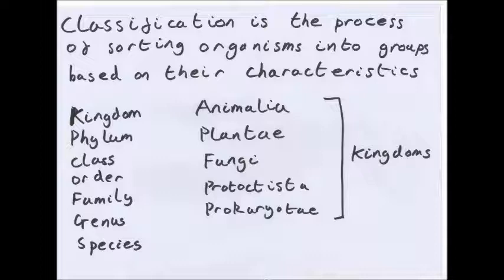Protoctista are usually unicellular but can be multicellular, and they will have a nucleus. Protoctista are generally the outcasts of the other four kingdoms. Prokaryotae are unicellular with simple cellular structures and no nucleus, and may be autotrophic or heterotrophic.